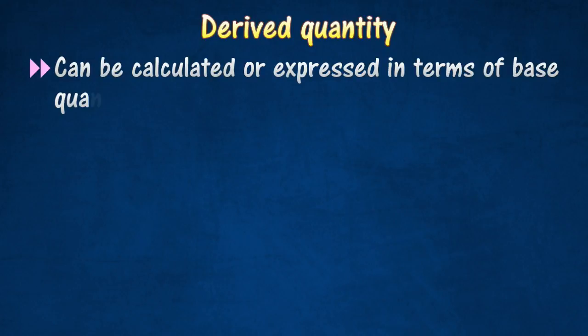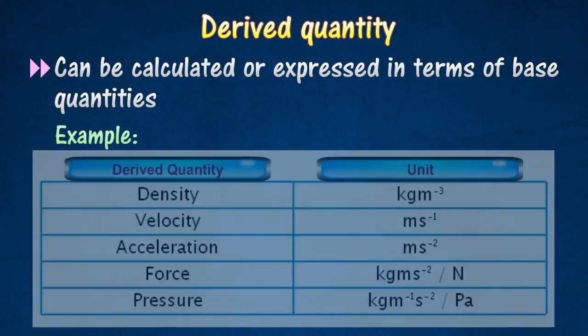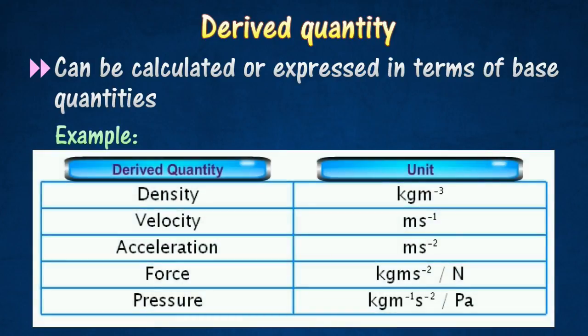Derived quantity is a physical quantity that can be calculated or expressed in terms of base quantities. Examples of derived quantities are density, velocity, acceleration, force, and pressure.